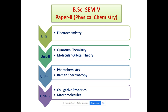Paper 2 contains four units. Unit 1 is electrochemistry. Unit 2 is quantum chemistry and molecular orbital theory. Unit 3 is photochemistry and Raman spectroscopy. Unit 4 contains colligative properties and macromolecules.